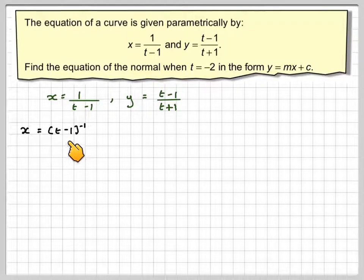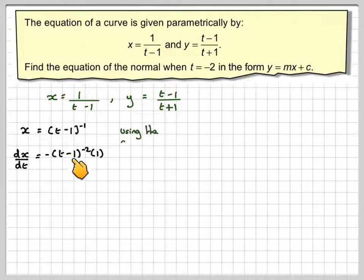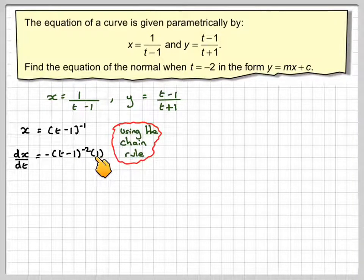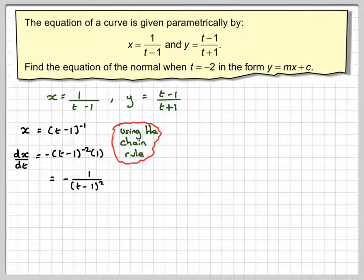So x is t to the power of minus 1, and if we differentiate that we bring down the minus 1 in front, write down the bracket, reduce the power by 1 and then multiply it by the differential of the bracket. Don't forget that, although it's only 1 in this case, sometimes it's not 1 and people generally tend to forget that. That could be written as minus 1 over t minus 1 squared using the rule of indices.